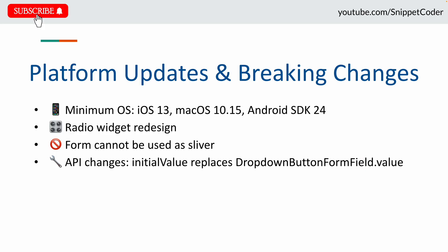There are a few important breaking changes to be aware of. Minimum OS support is now iOS 13 and macOS 10.15. For Android, the minimum SDK is now 24. The Ratio widget has been redesigned and can no longer be used as a sliver, and DropdownButtonFormField now uses initialValue instead of value. Make sure to review these before upgrading.